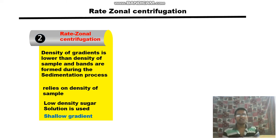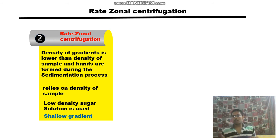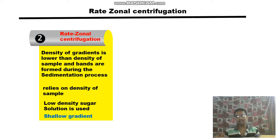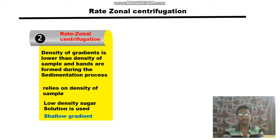Zones form in the upper, middle, and lower parts of the centrifuge tube. You can then collect each zone into different centrifuge tubes to differentiate particles of different densities.